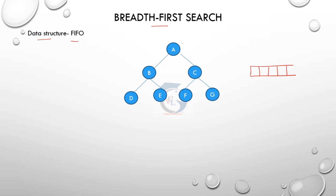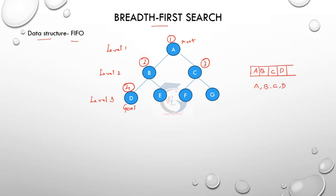The tree has three levels. We first visit the root node, then insert B, then C as the goal node, and then reach D. A is deleted as the first inserted element. Then D is deleted, and finally we reach D as the goal state.